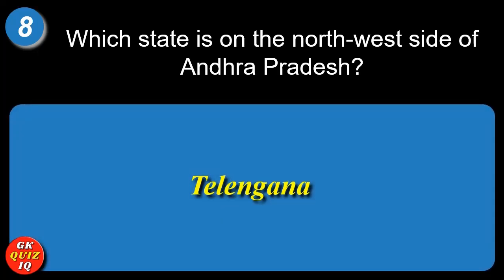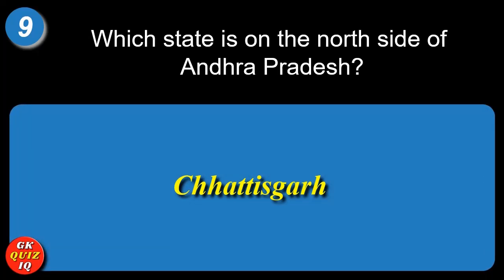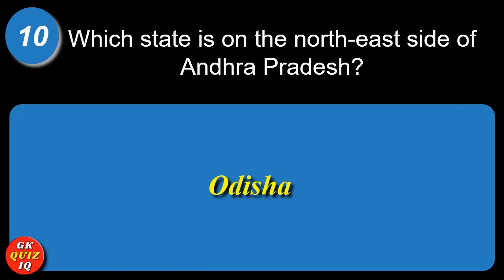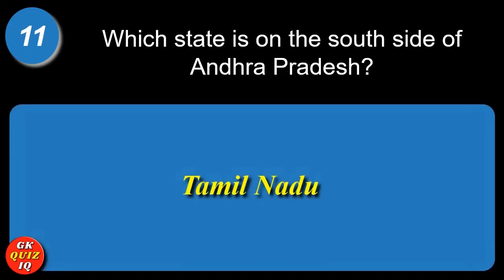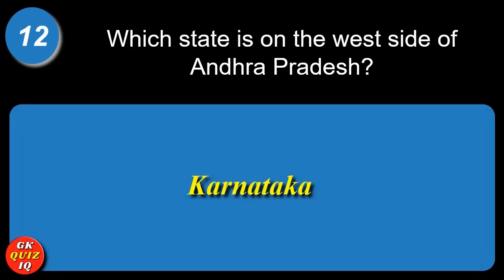Which state is on the north west side of Andhra Pradesh? Telangana. Which state is on the north side of Andhra Pradesh? Chhattisgarh. Which state is on the north east side of Andhra Pradesh? Odisha. Which state is on the south side of Andhra Pradesh? Tamil Nadu. Which state is on the west side of Andhra Pradesh? Karnataka.